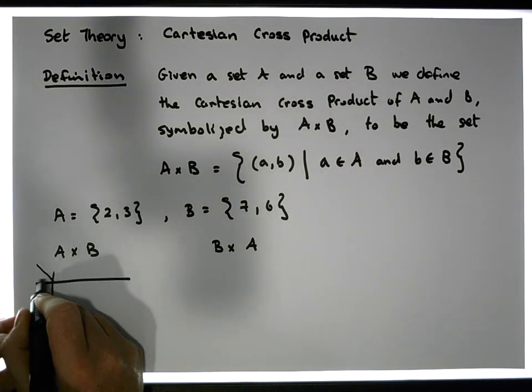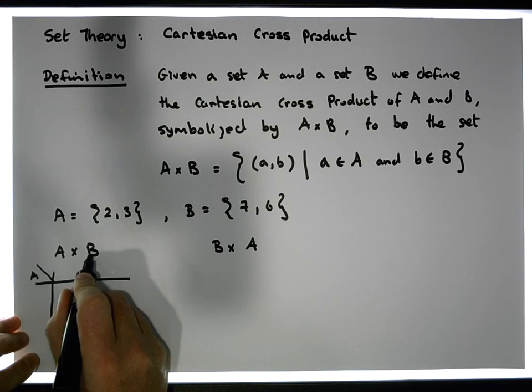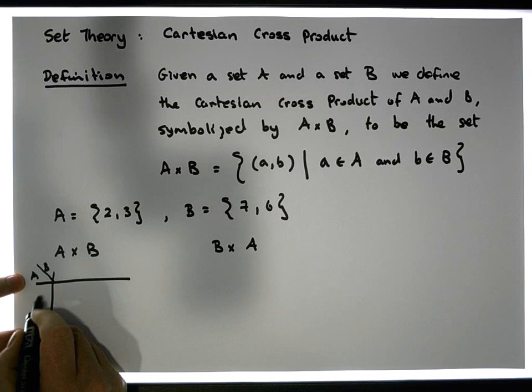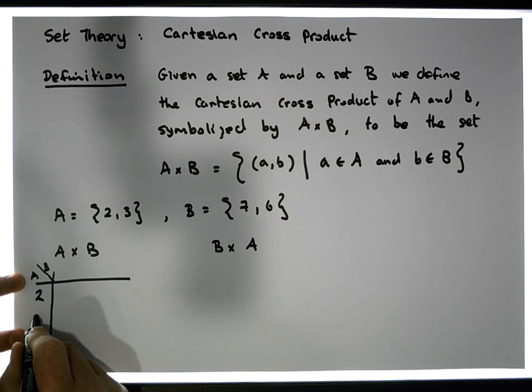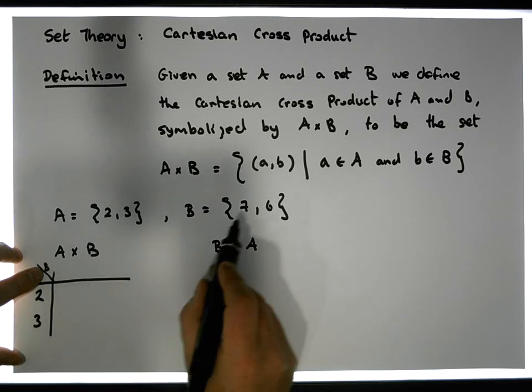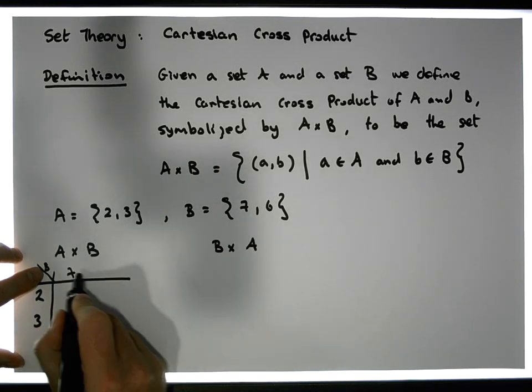So we always list the first set down here, and the second set B across the top. So underneath the column A, we list the values that are in the set A, so we have 2 and 3. Across the row that we've called B, we list the values that are in the set B, which are 7 and 6.